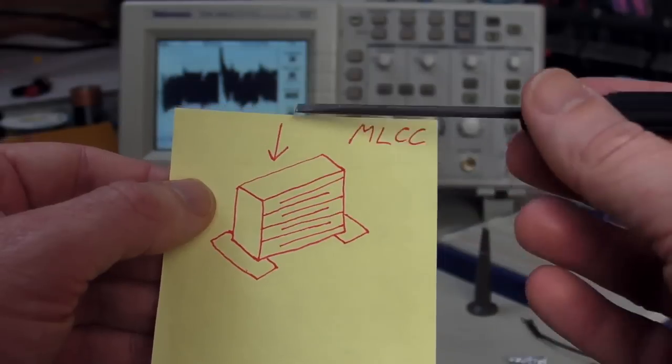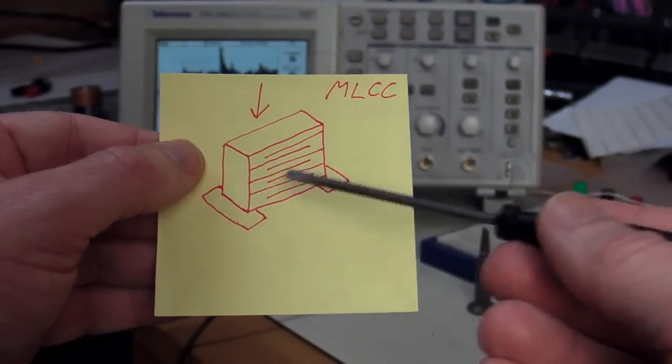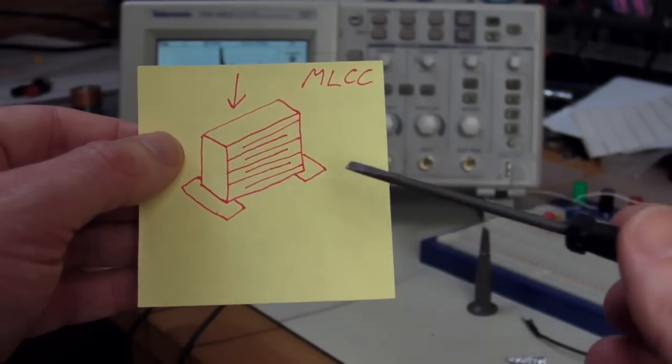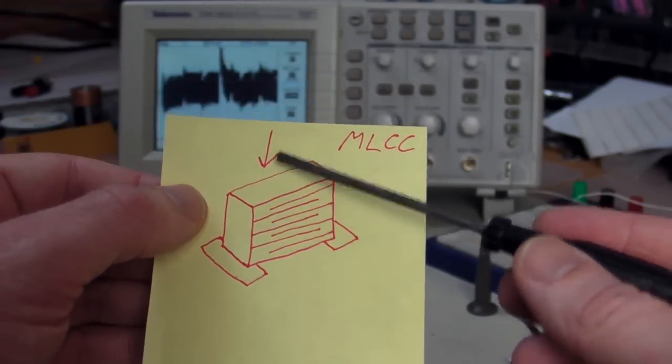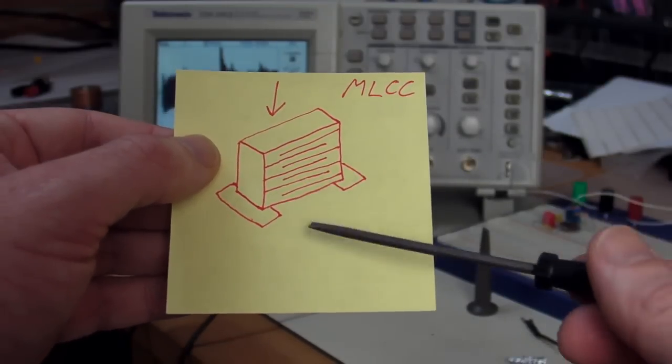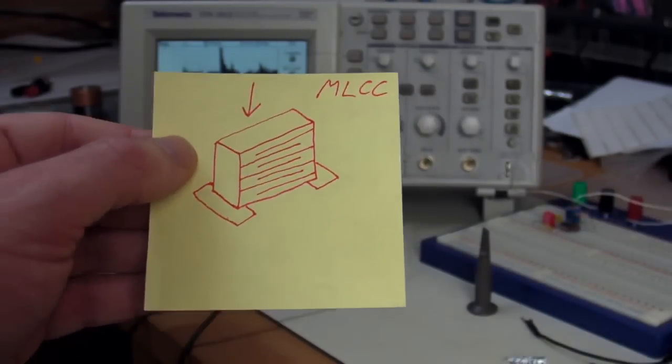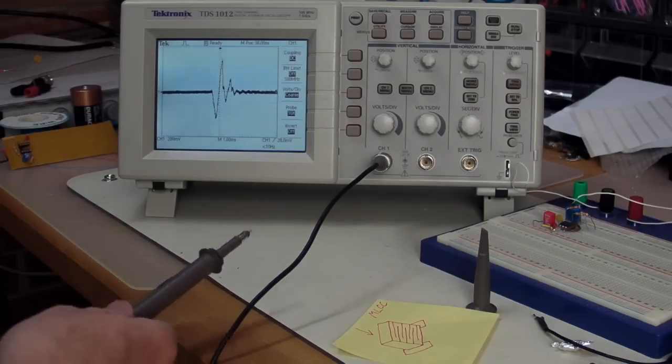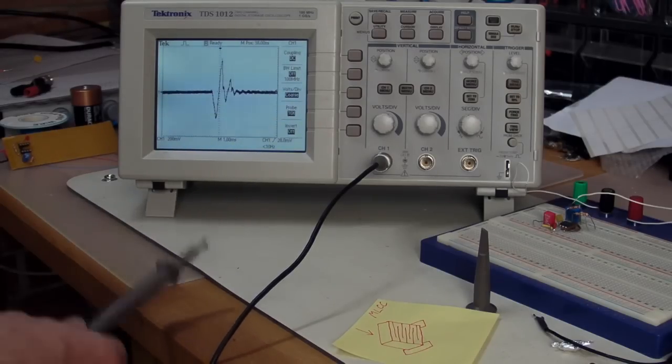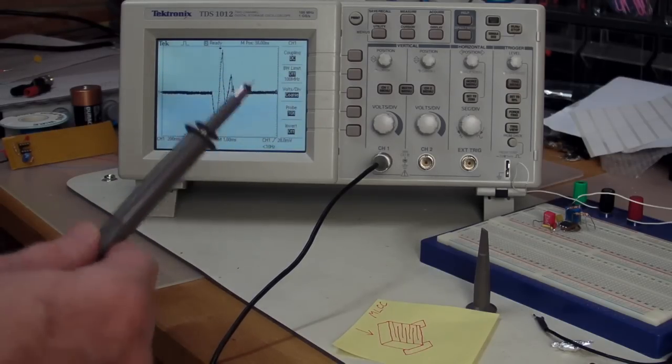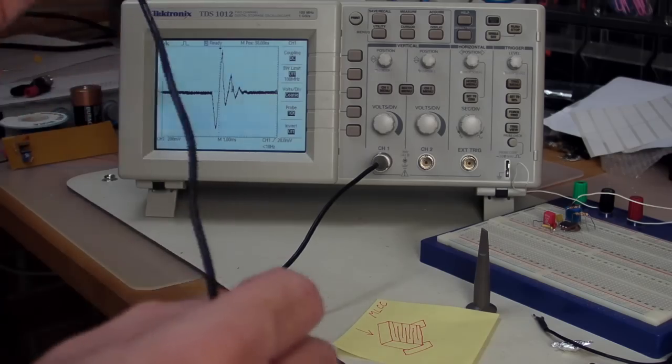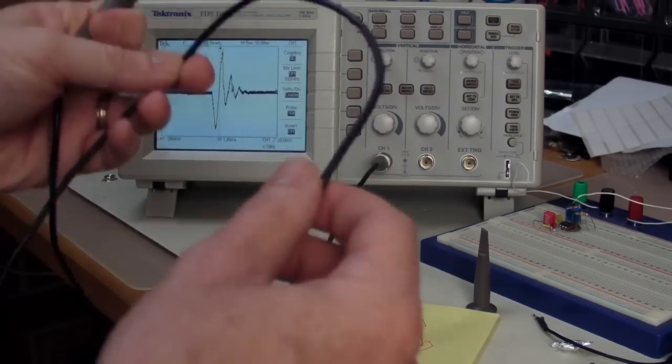If you apply a shock or a vibration into the capacitor, it will generate a voltage, but likewise, it will also generate sound output if you input a specific frequency at a high enough level. Now, don't confuse this piezoelectric effect with what's called the triboelectric effect, which typically applies to cables.